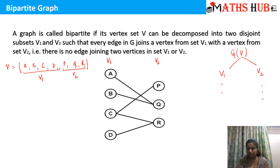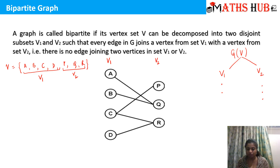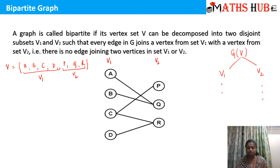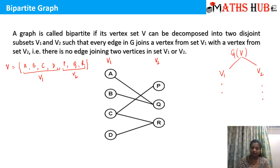None of the vertices in V1 are joined amongst themselves, and none of the vertices in V2 are joined amongst themselves. So for a bipartite graph, bi means two partitions are made, and every edge will always join one vertex in V1 with a vertex in V2.